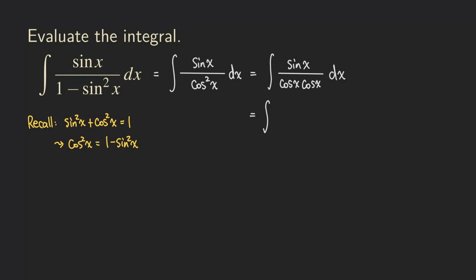So I can break that as sine x over cosine x. And then as you can see here, we are actually getting tangent. And then times 1 over cosine x.